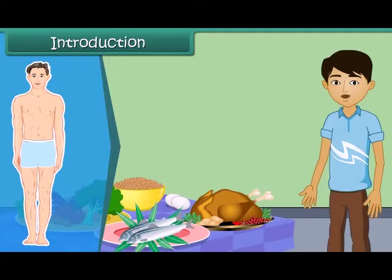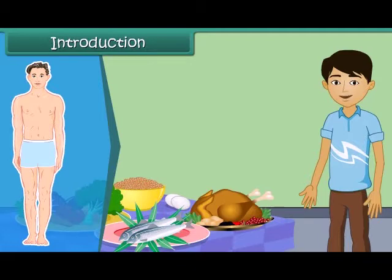We get our food from both plants and animals. Food has to be produced on a large scale to meet everyone's requirements. In this module, we will discuss about crop production and its management for the distribution of food.